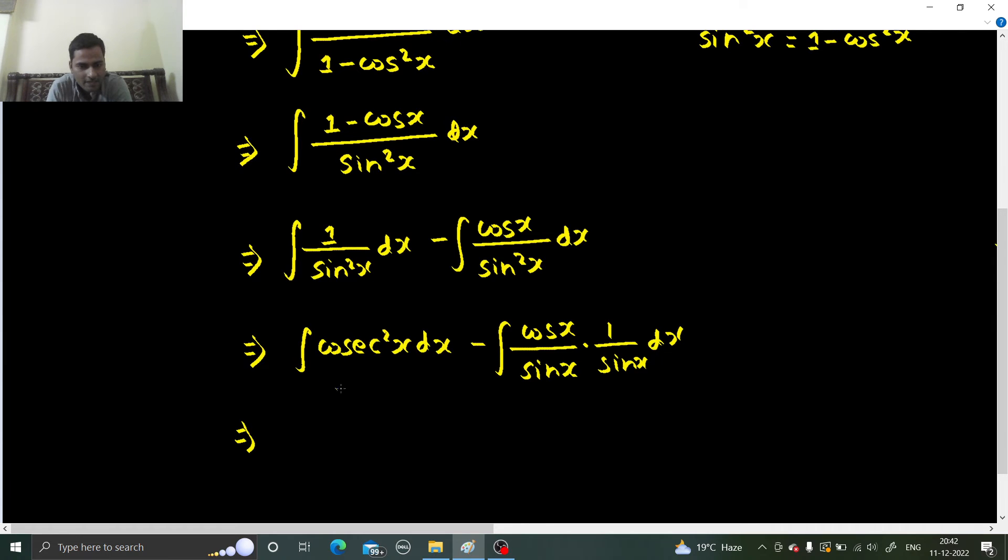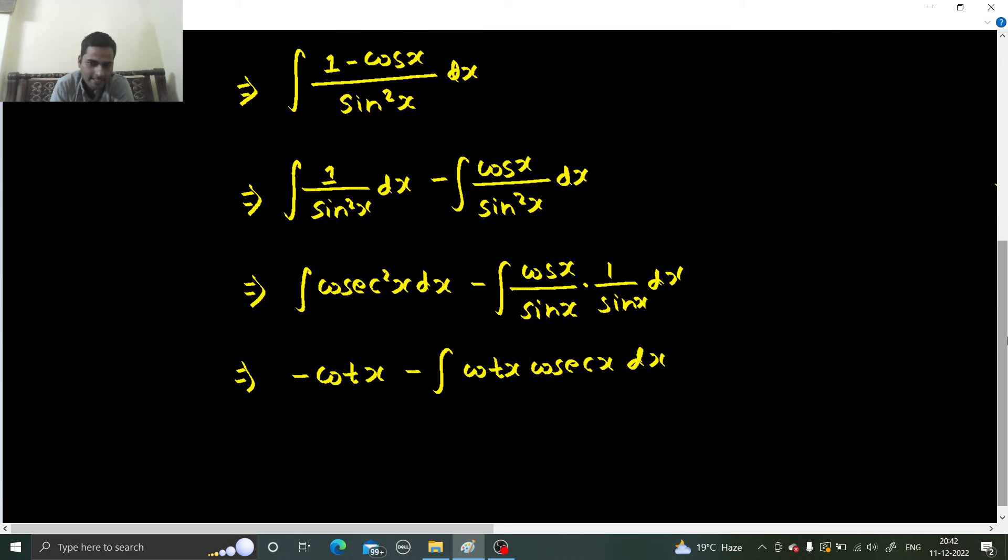Integral of cosecant square x is minus cot x, and here it will be cot x, and integral of cosecant x cot x is minus cosecant x.